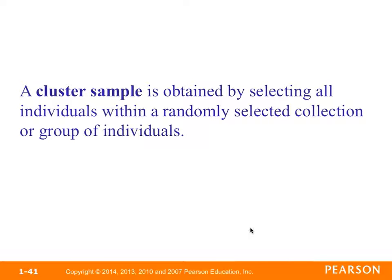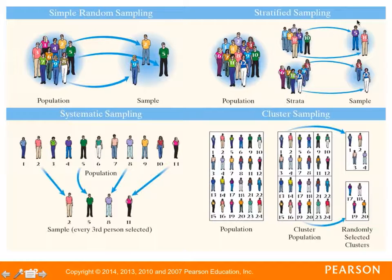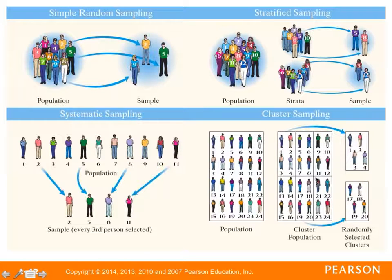A cluster sample is obtained by selecting all individuals within a randomly selected collection or group of individuals. Looking at visual depictions of these methods: simple random sampling looks random — persons 2, 5, and 9 were as likely as any other group to be chosen. Stratified sampling groups individuals — for example into males and females — then does simple random sampling within each group. Systematic sampling might start at person 2 and select every third person: 2, 5, 8, and 11. Cluster sampling divides the population into clusters, then randomly samples entire clusters — for example selecting clusters containing persons 1–4 and persons 17–20.